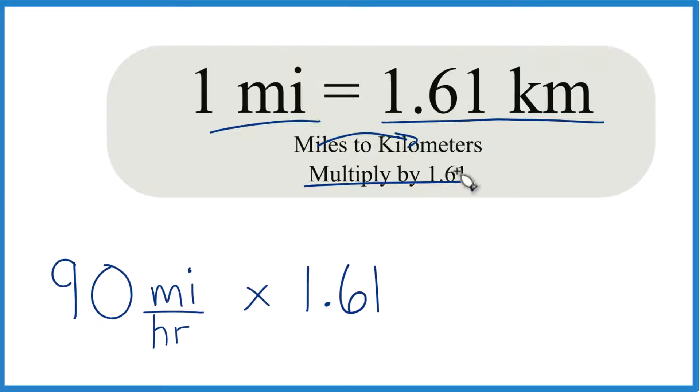And the reason is, it's 1.61 kilometers per mile, in one mile, so a mile like this.